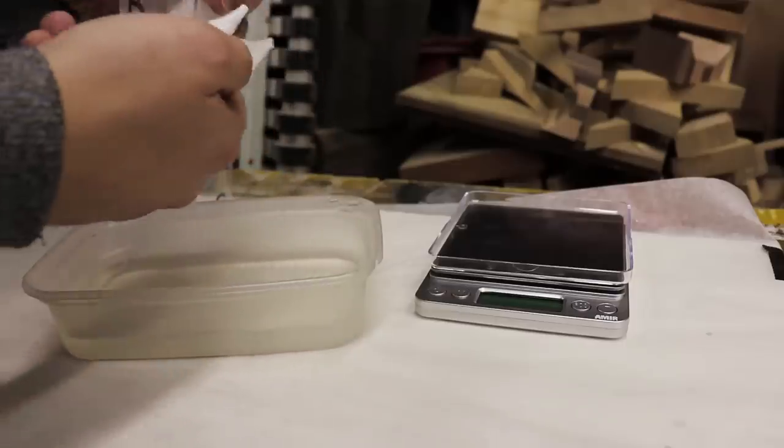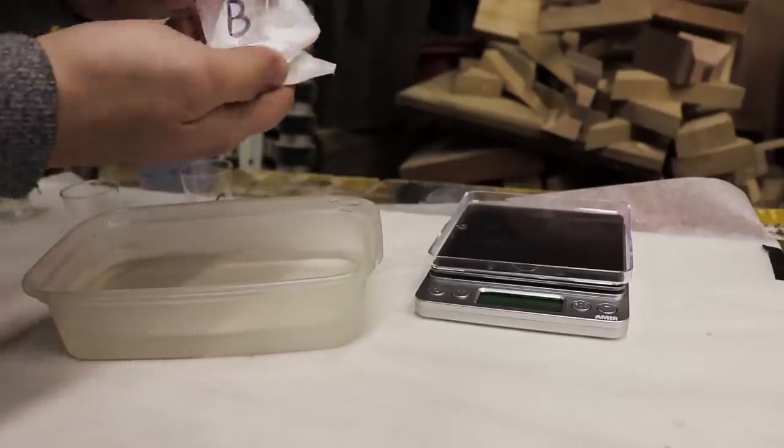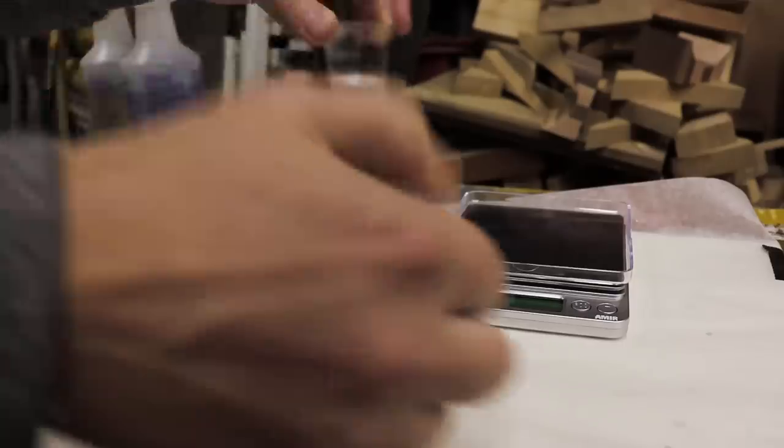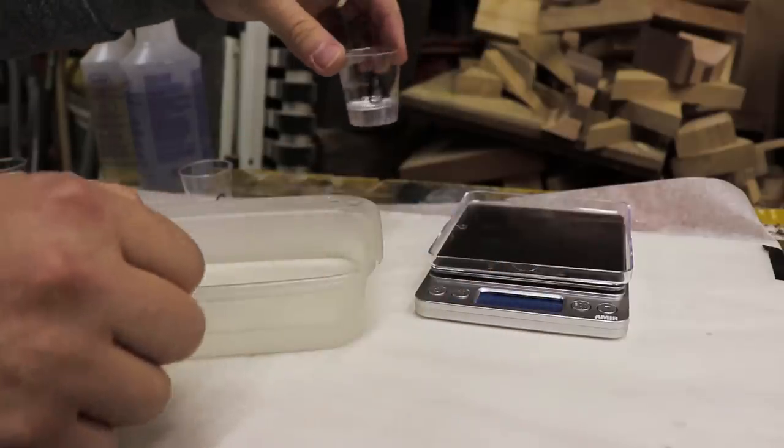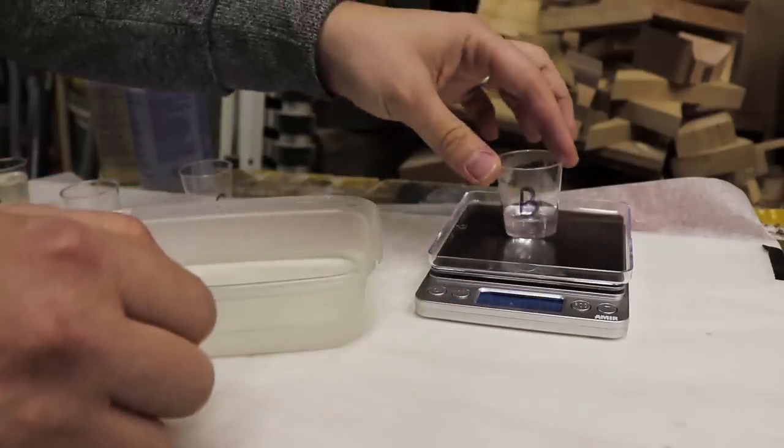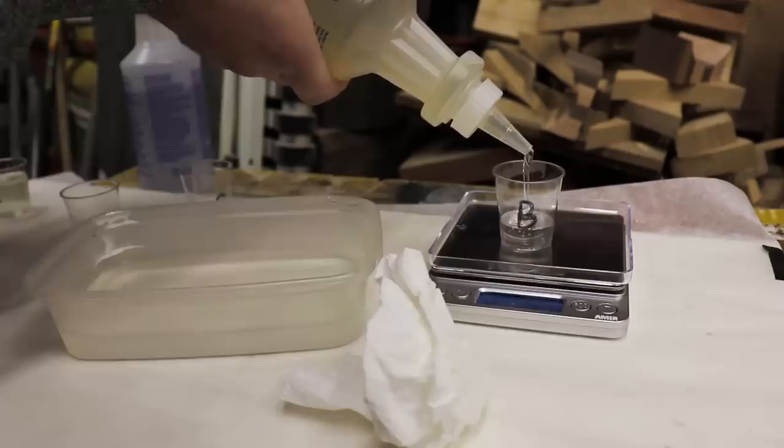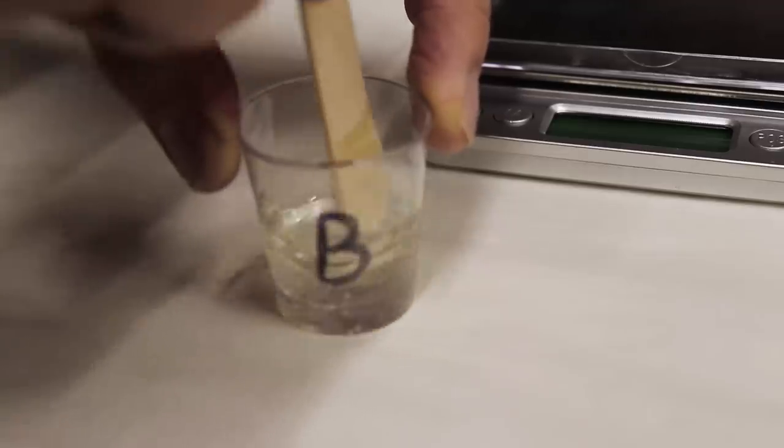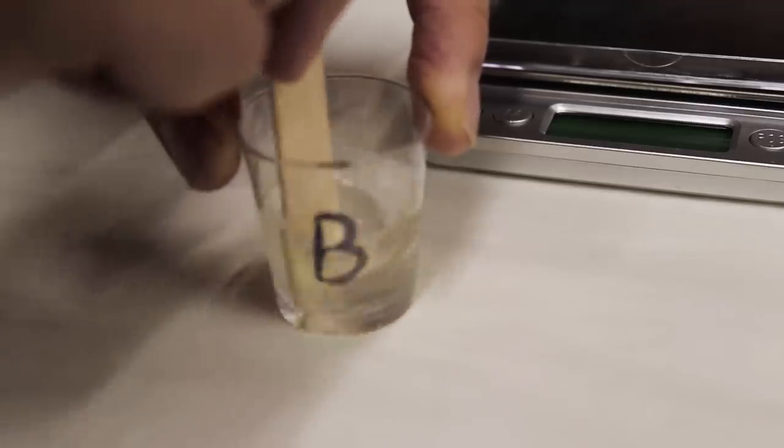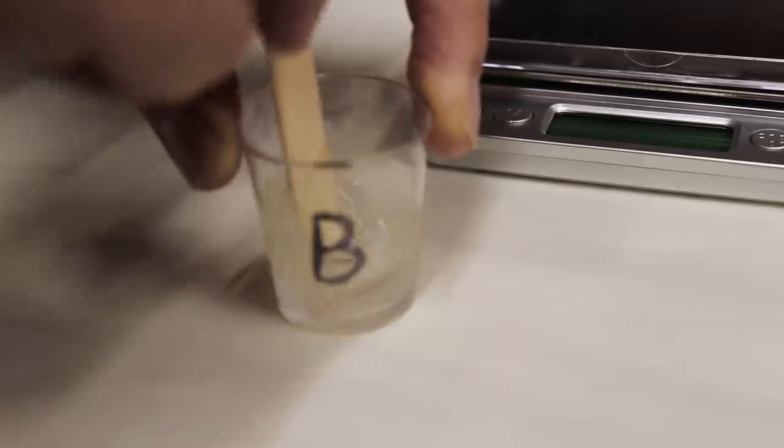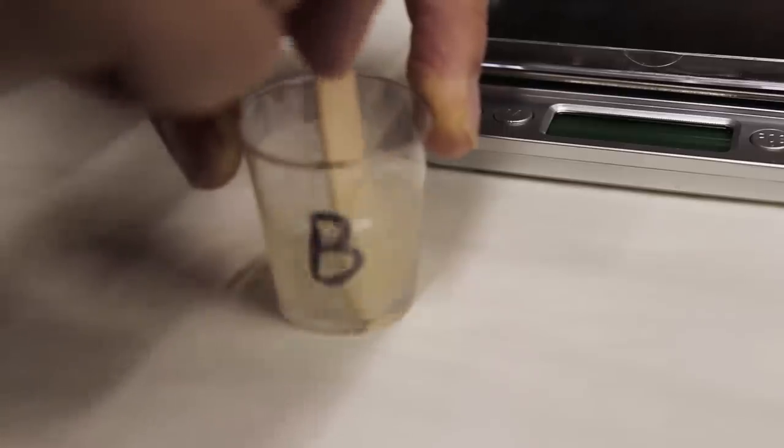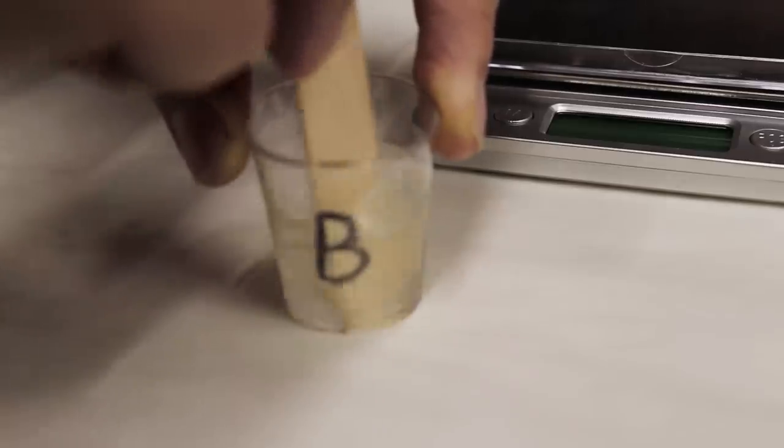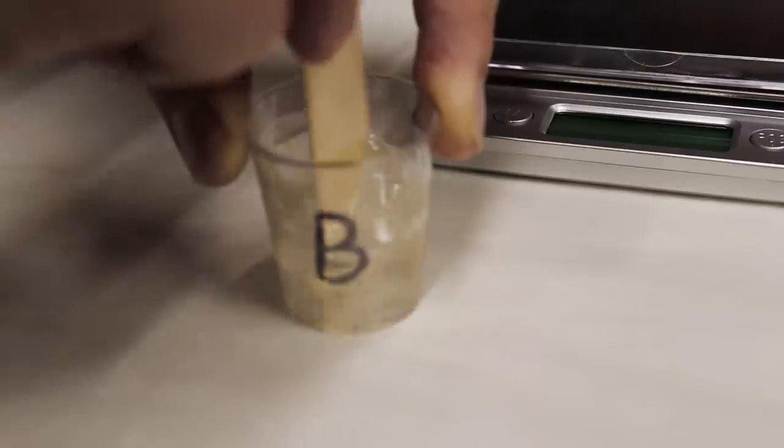After 10 minutes we'll take out the container with part A, place it back on scales and we're going to add component B. We'll gently mix it. You will notice that the mixing is a lot smoother and easier and there's a lot less air bubbles. Mix it really slow so you don't introduce any air bubbles to the mixture.